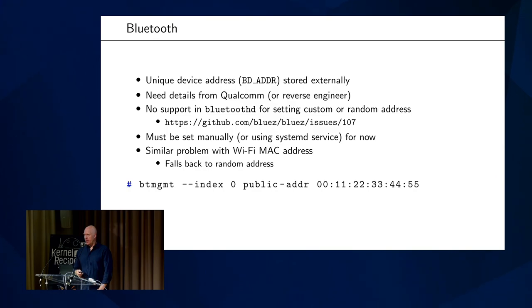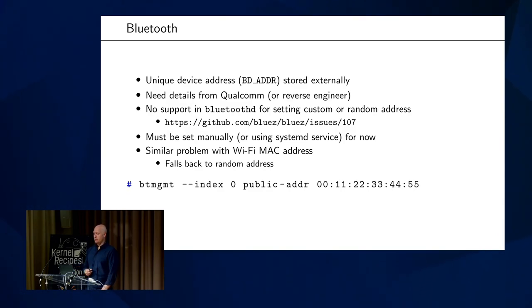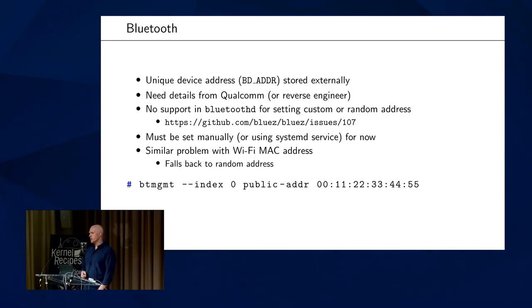Bluetooth support has been upstream since 6.4, but there are some missing pieces. One of those is that the device lacks a unique device address stored locally — it's stored externally. We need details from Qualcomm to access that, or we need to embark on another reverse engineering expedition. Unfortunately there is no support in the Bluetooth daemon for setting a custom address or generating a random one at boot. Hans de Goede, who's here today, identified this issue a few years back as it applies generally to other controllers as well. For now, you need to set the device address manually or create a custom systemd service.